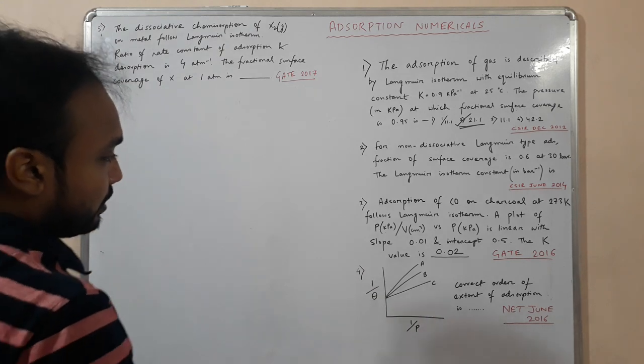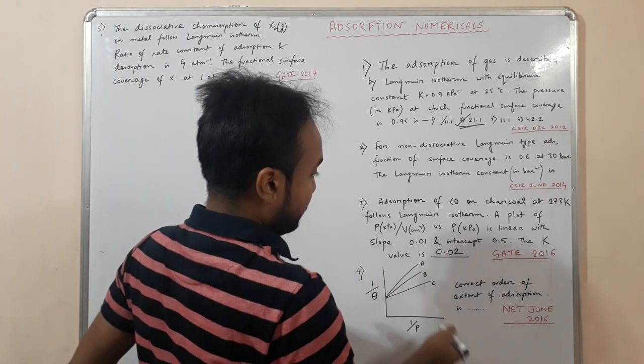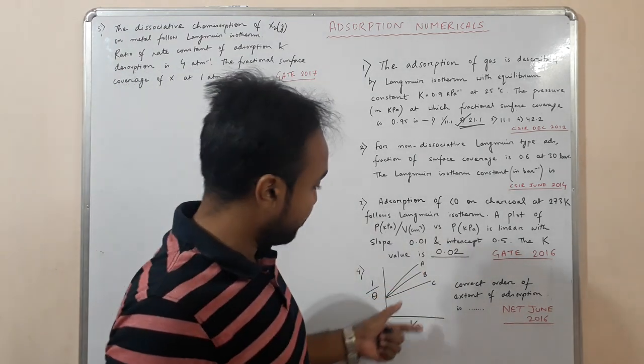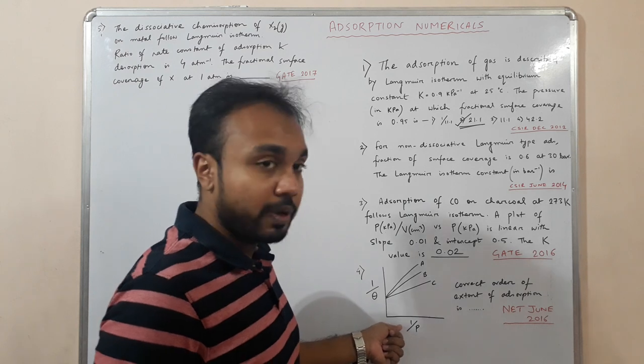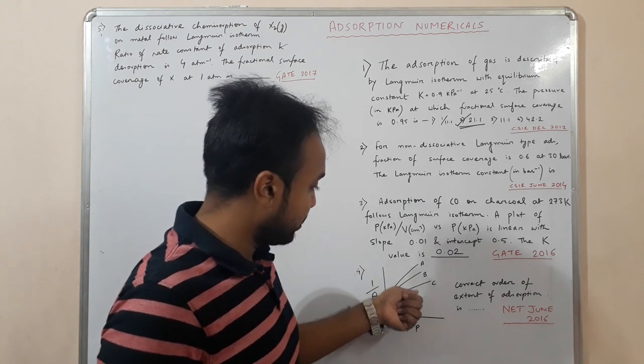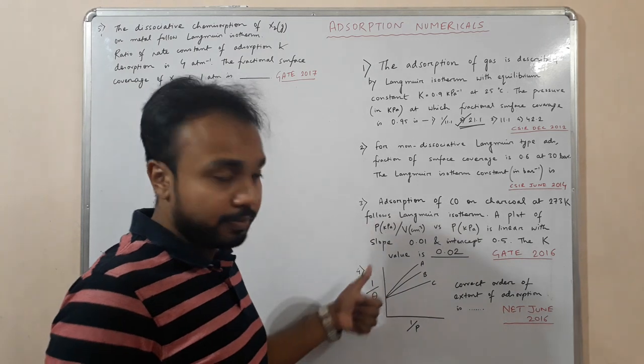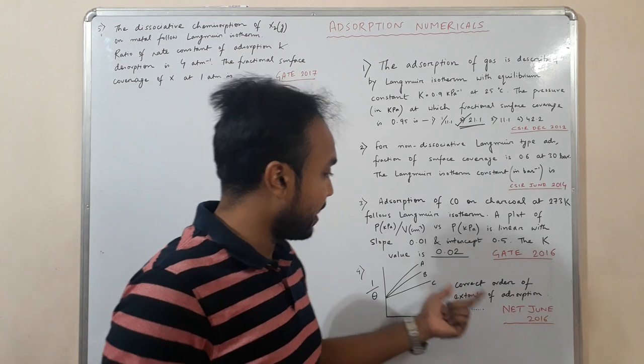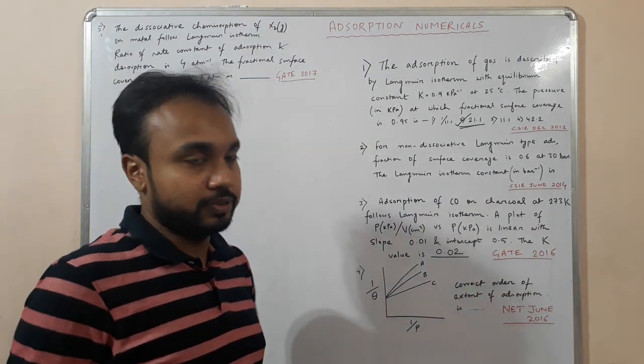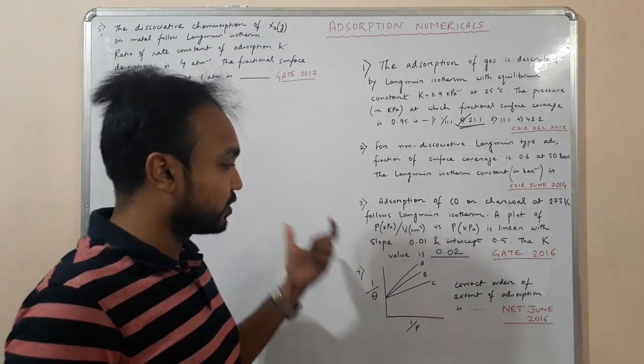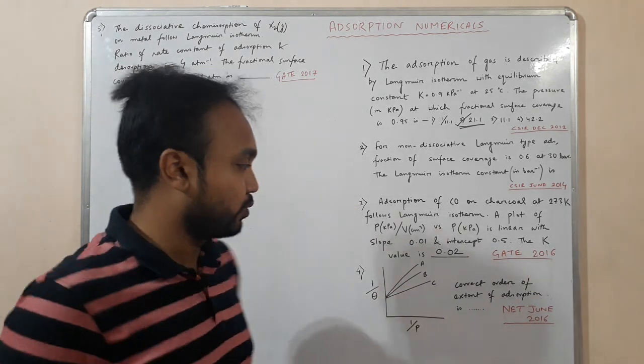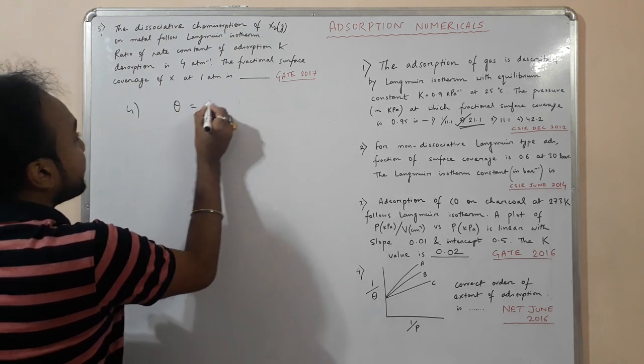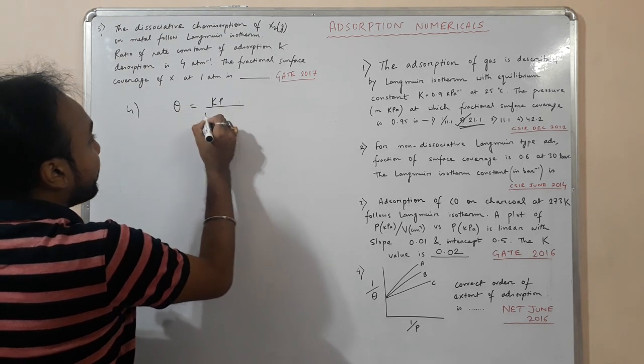Let's move on to the next numerical. We have given adsorption of three gases which follows this type of plot. When 1 by theta is plotted against 1 by P, we are getting straight lines with different slopes. Intercepts are same but slopes are different. This is gas A, gas B, and gas C. We are asked to find the order of the extent of adsorption. Which one will get adsorbed more, then the middle one, then the least one.